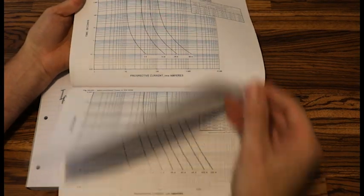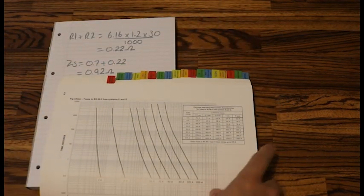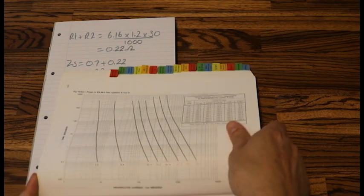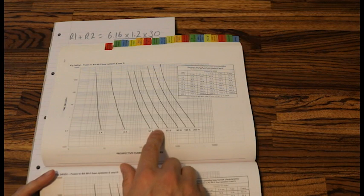So our question says we are using a BS88-2. We've got a 3036, and here we're down on this table here. We are looking at a BS88-2 with a 32 amp.